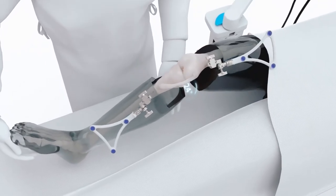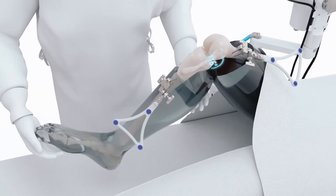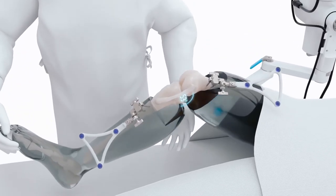Your surgeon will move your leg back and forth to test the function of your knee. This will help assess your full leg alignment and soft tissue tension.